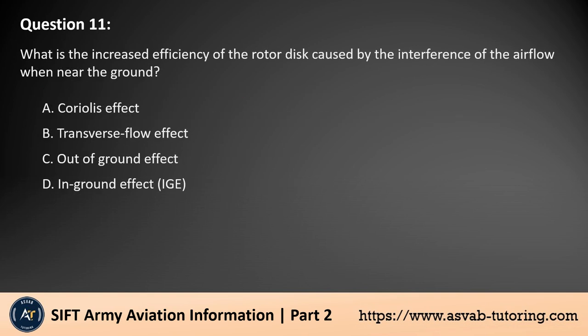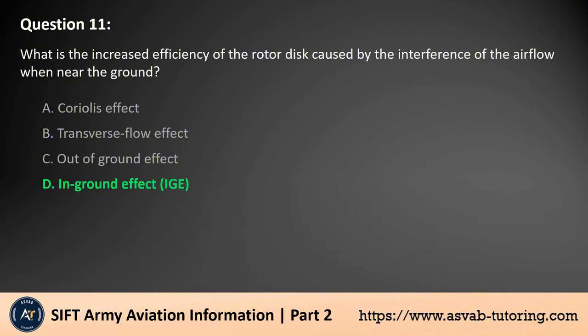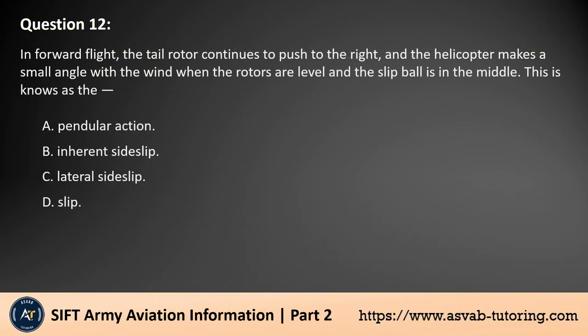Question 11. What is the increased efficiency of the rotor disc caused by the interference of the airflow when near the ground? A. Coriolis effect. B. Transverse flow effect. C. Out-of-ground effect. D. In-ground effect (IGE). The answer is D. The increased efficiency of the rotor disc caused by the interference of airflow when near the ground is known as in-ground effect (IGE). This phenomenon occurs when a helicopter operates close to the ground, resulting in reduced induced drag and increased lift due to the ground's influence on the rotor's downwash. It allows helicopters to achieve better performance during takeoff and landing.